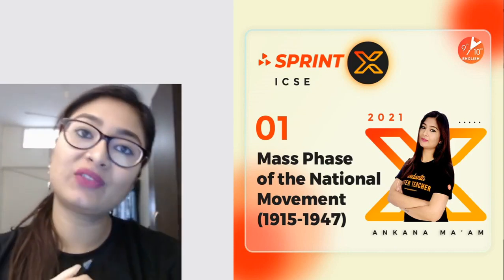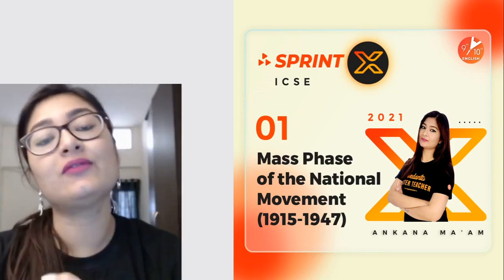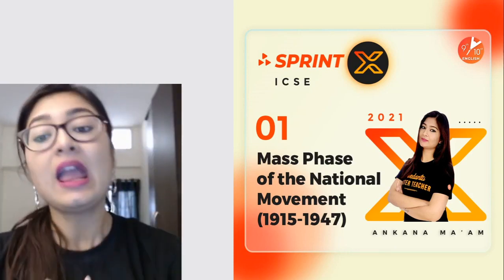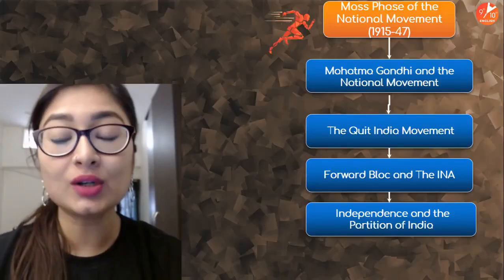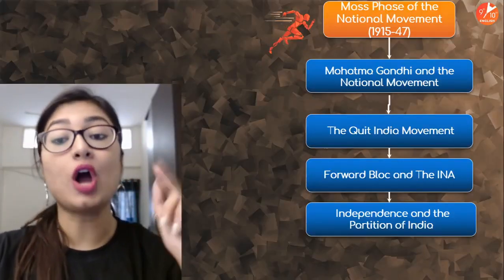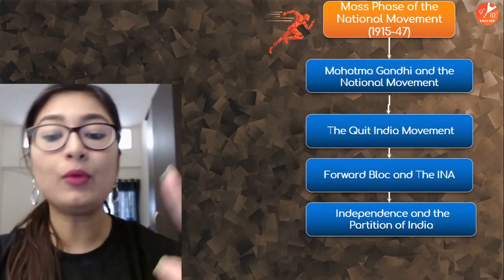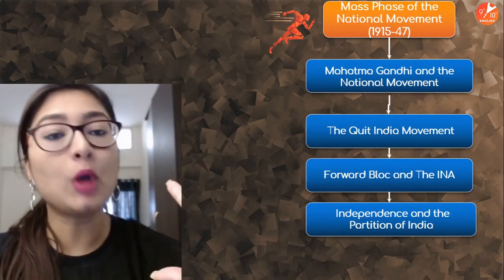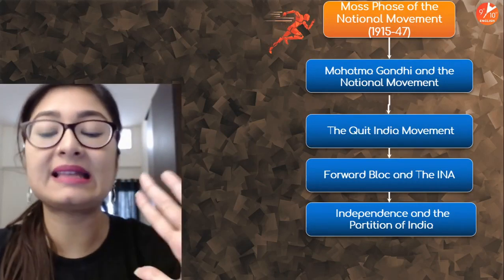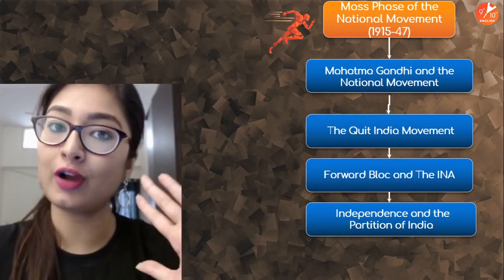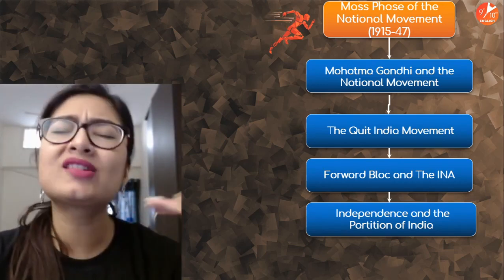This is the mass phase of the national movement, right from 1915 till 1947. Under this, we're going to cover Mahatma Gandhi and the national movement, the Quit India Movement, Forward Bloc, the INA, and of course independence and the partition of India.